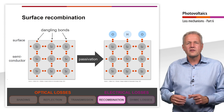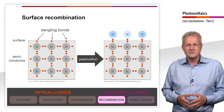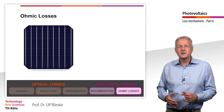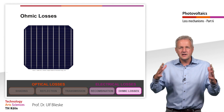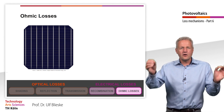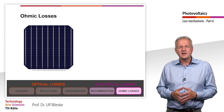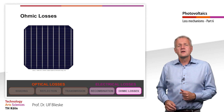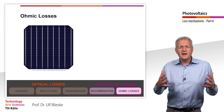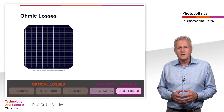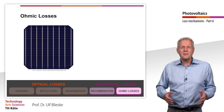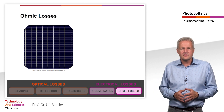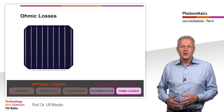Let us now turn to the final loss mechanism. Assuming everything has gone well so far — a photon with appropriate energy hits the semiconductor, is absorbed, and creates a free charge carrier pair that reaches the contacts without recombining — these charge carriers still experience electrical resistance on their way through the semiconductor and through the contacts, which leads to ohmic losses. There are a number of contacting technologies for solar cells that differ greatly from one another, so we will return to this in the next chapters. Here I will give a brief overview, as it always plays a role in the overall view of losses.